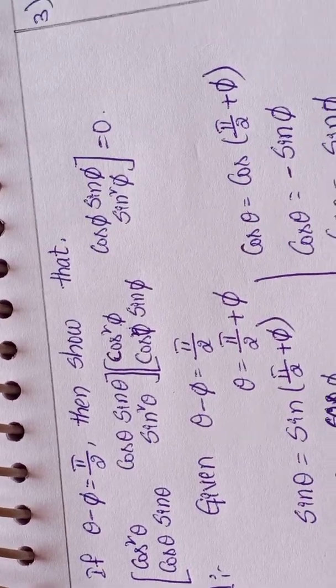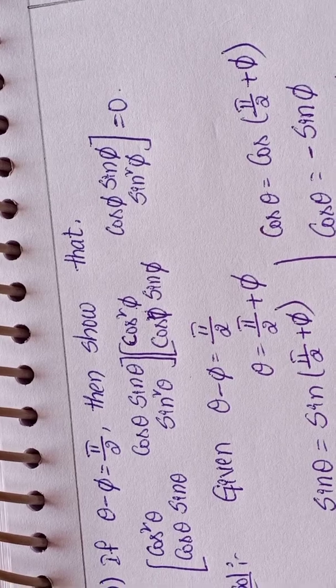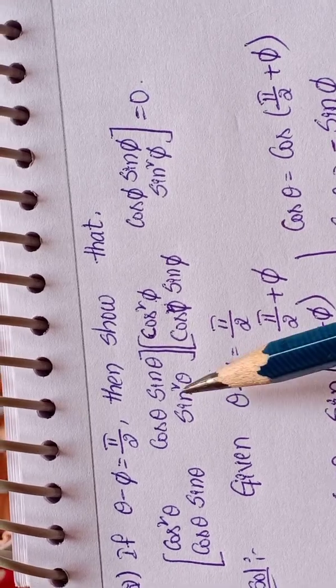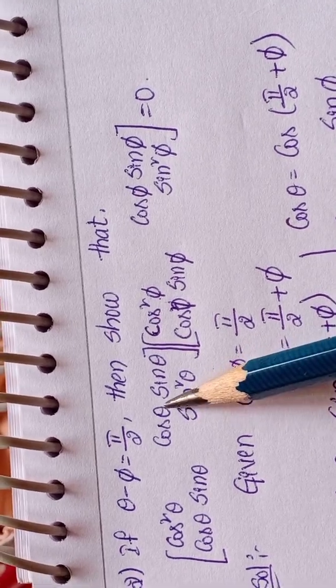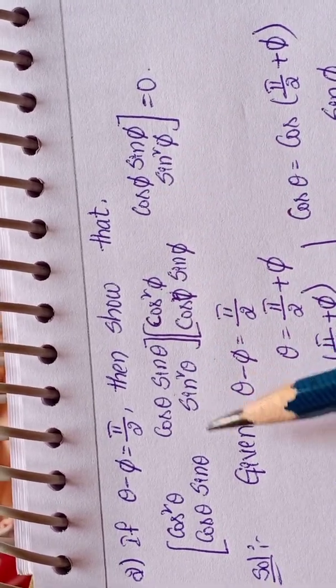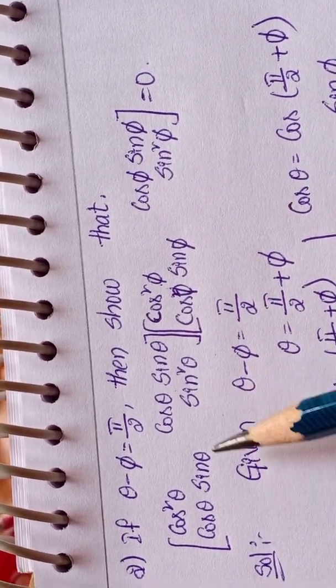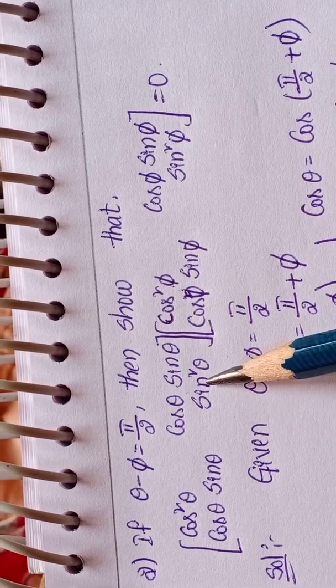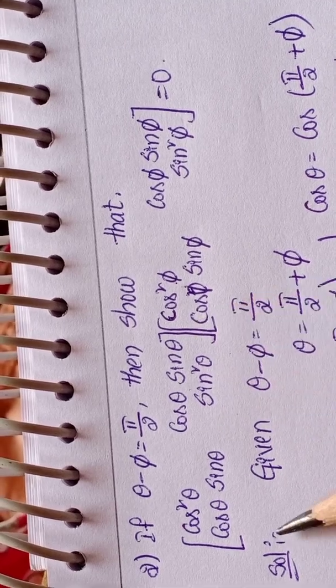Second question: if theta minus pi equals pi by 2 (that is 90 degrees), then show that the matrix with entries cos squared theta, cos theta sin theta, cos theta sin theta, sin squared theta multiplied by another matrix equals zero.